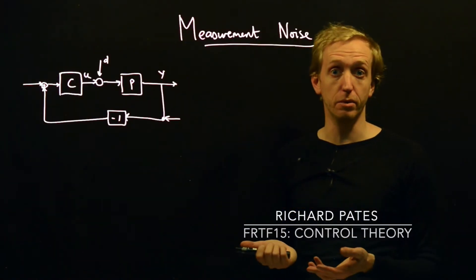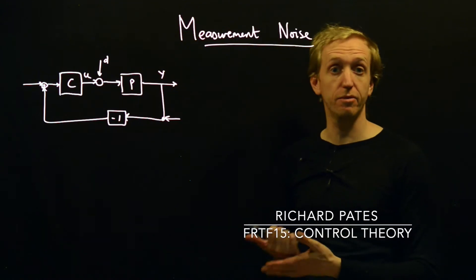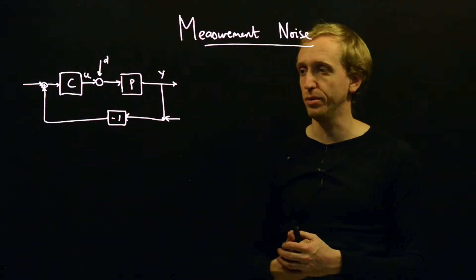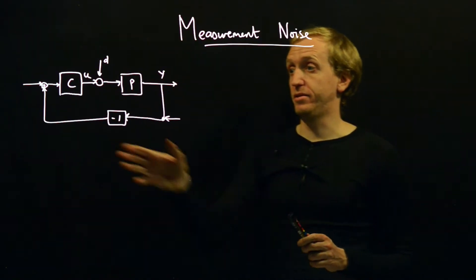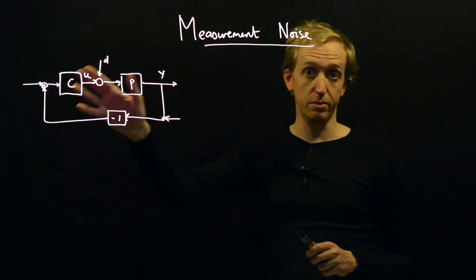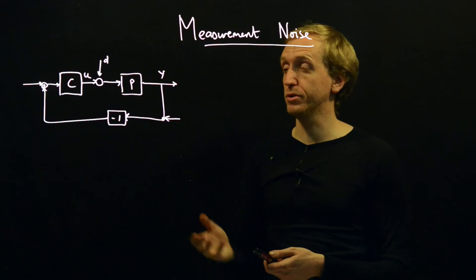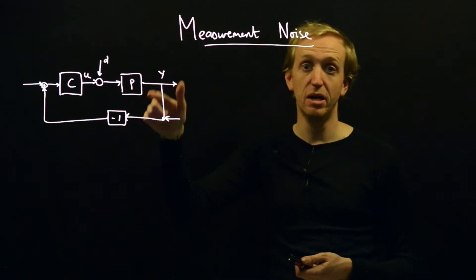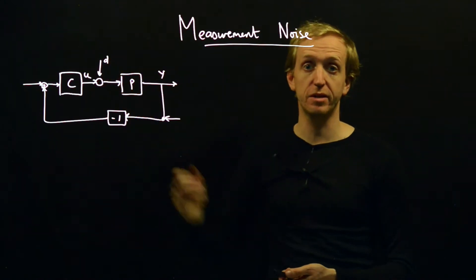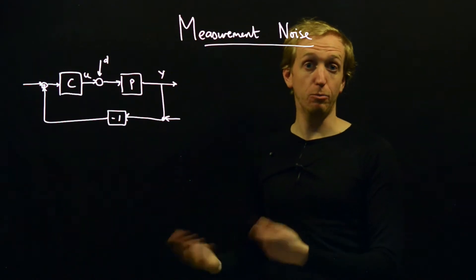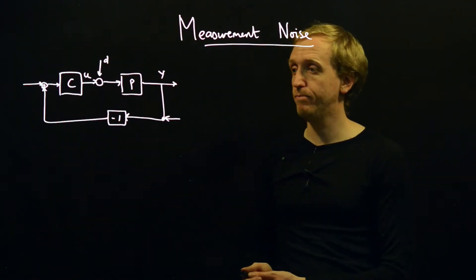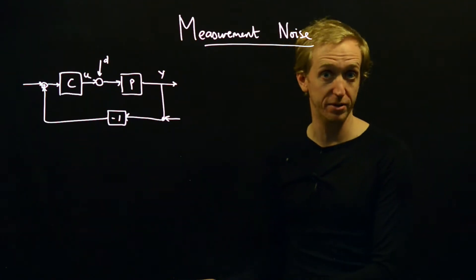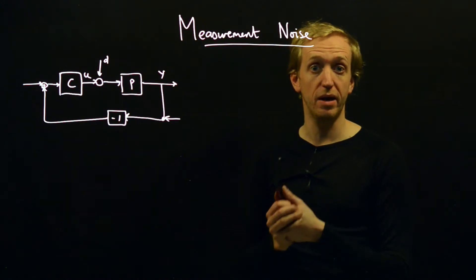I want to talk about measurement noise and the detrimental effect it can have on the performance of a feedback system, and some of the things you can do to minimize the effect or understand what the effects will be. We're focusing on understanding how control system design can reduce uncertainty in the behavior of a process — uncertainty in the dynamics and uncertainty from external disturbances. Through using feedback, we can make the output behave predictably despite these uncertainties. But the very act of using feedback introduces more uncertainty, and one of the clearest ways this happens is through measurement noise.